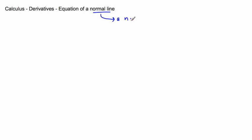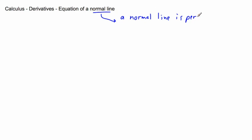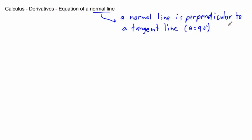Finding the equation of a normal line is very similar to finding the equation of a tangent. The only difference is what 'normal' means here — not normal as in regular, but a normal line is perpendicular to a tangent line. In other words, the angle between them is 90 degrees.